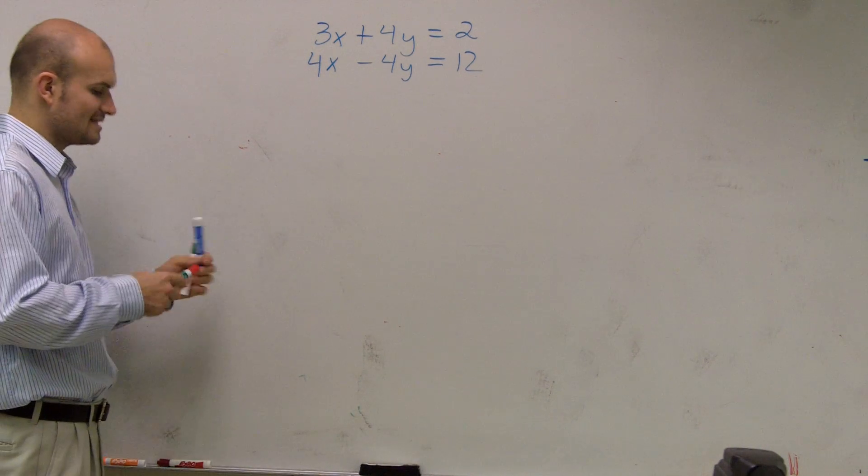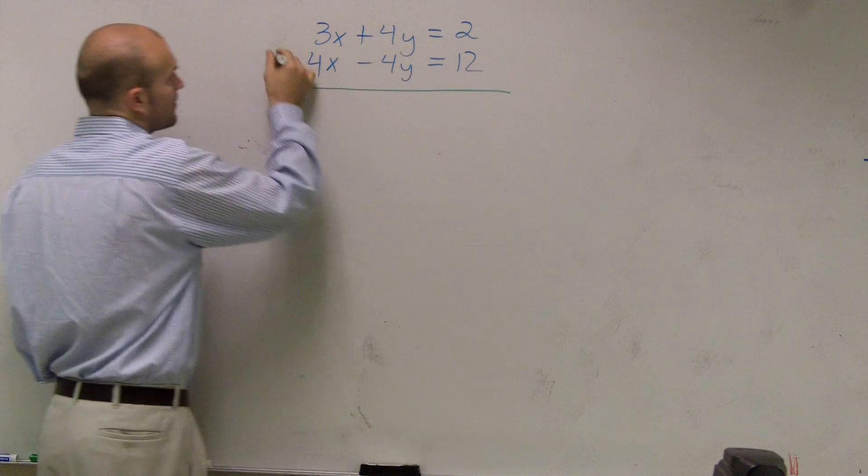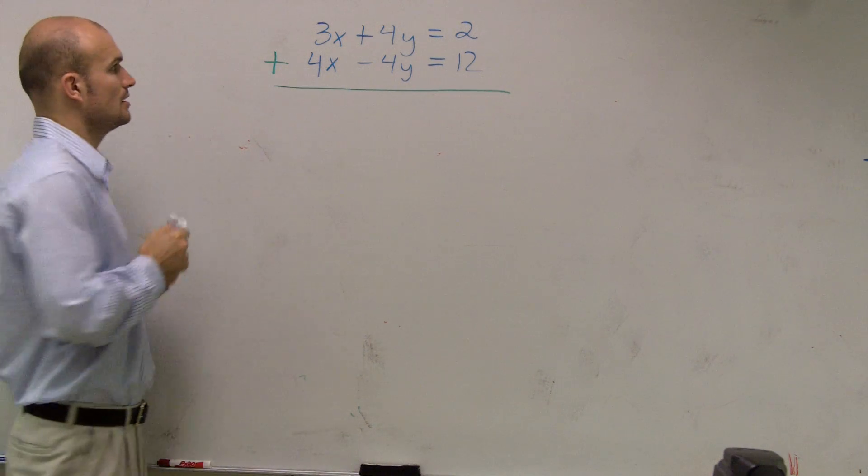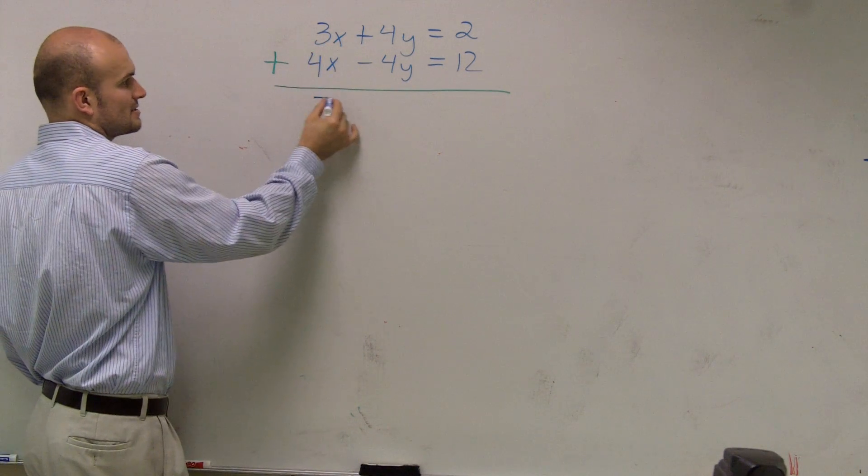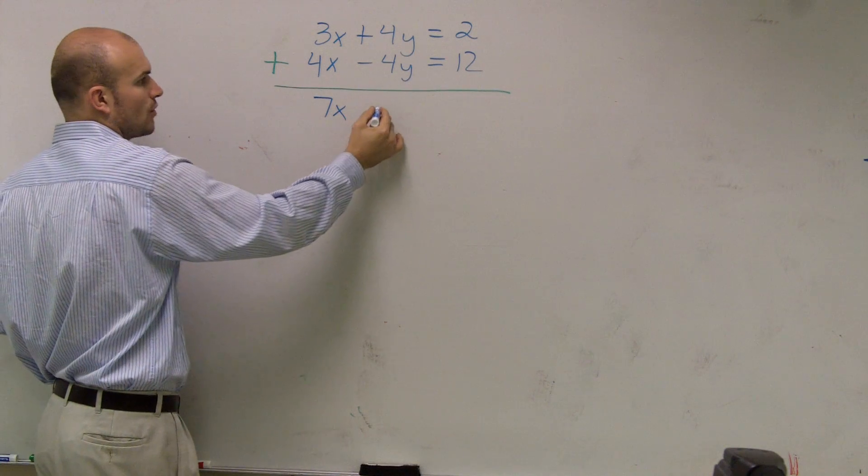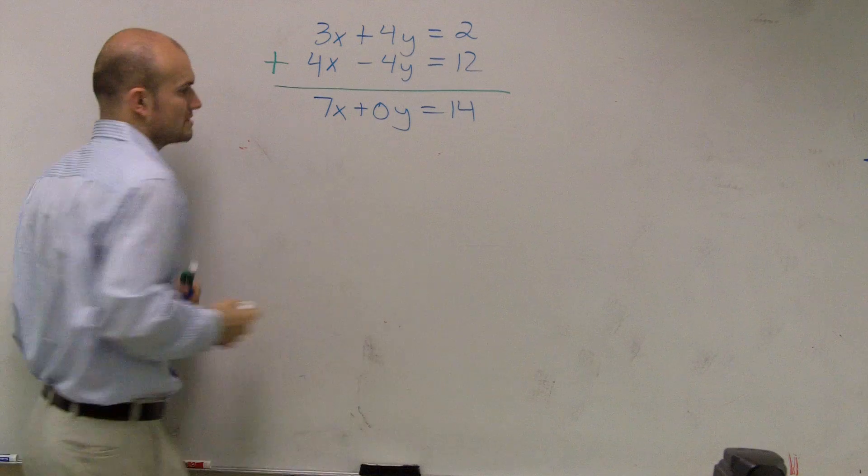So all I'm simply going to do is the exact same thing I did like subtraction. But now I'm going to do addition. So you have 3x plus 4x is 7x. 4y plus negative 4y is 0y. 2 plus 12 is 14.